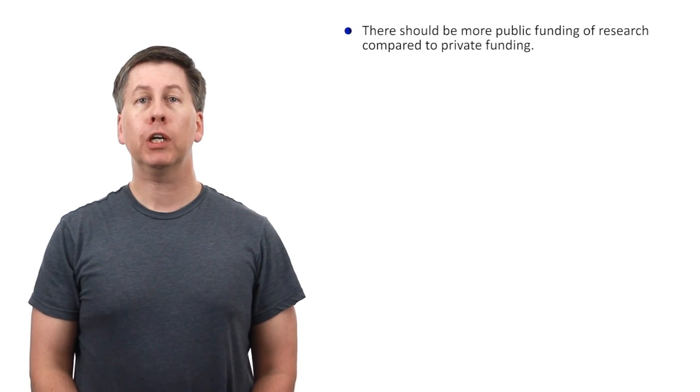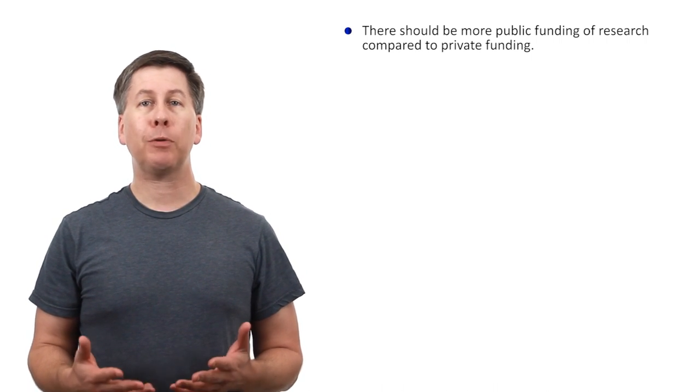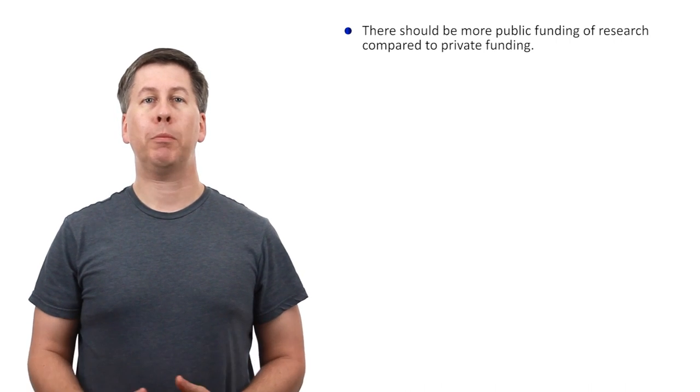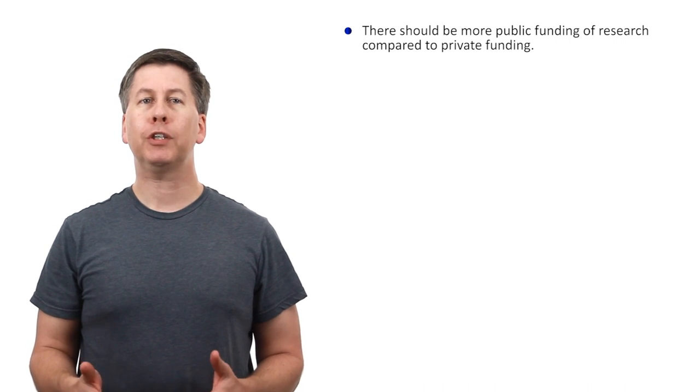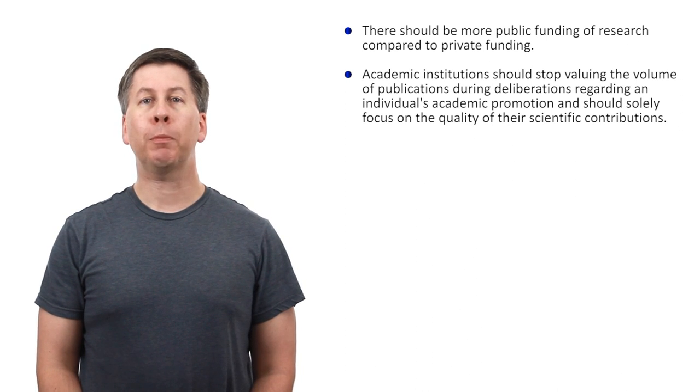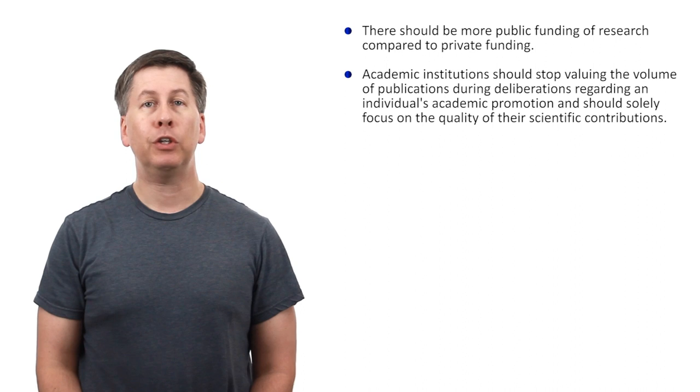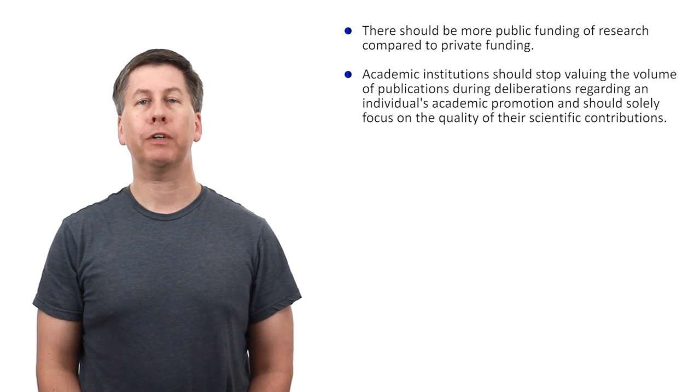Now let's talk solutions. How can we improve the quality and reliability of published medical research and of medical science more generally? There should be more public funding of research compared to private funding. This isn't to say that private companies can't pay for their own studies. Of course they should be able to do so. But to help reduce conflicts of interest, the balance should tip the other direction. Academic institutions should stop valuing the volume of publications during deliberations about an individual's academic promotion, and should solely focus on the quality of their scientific contributions.